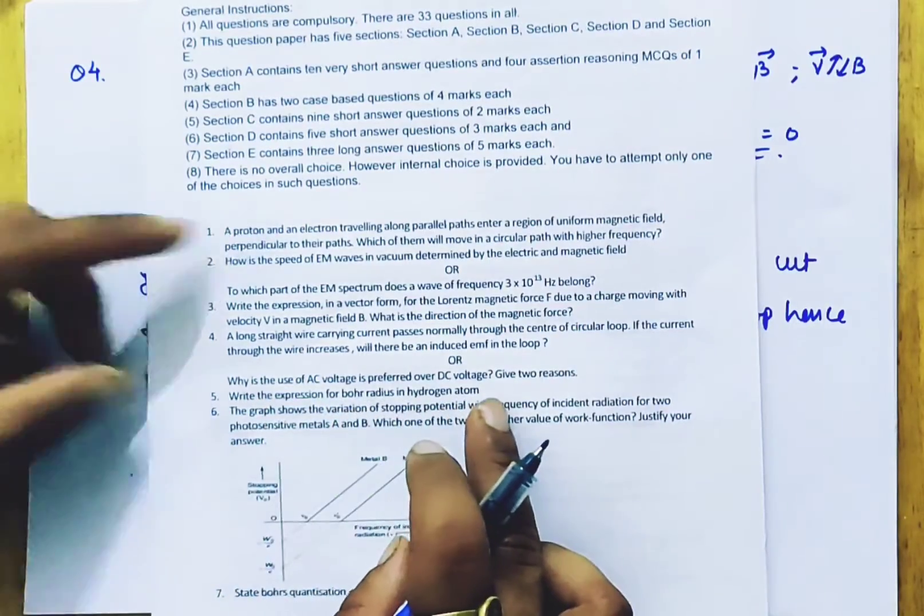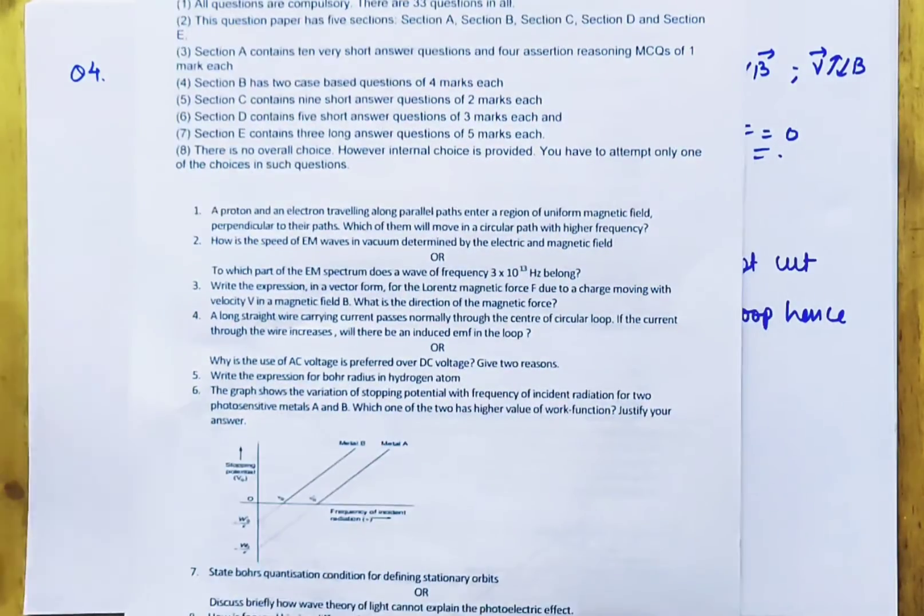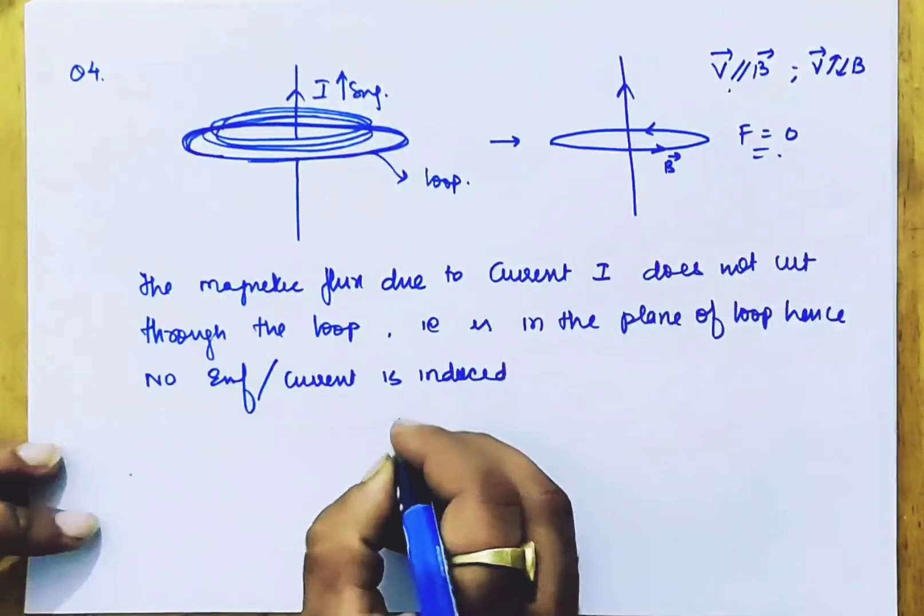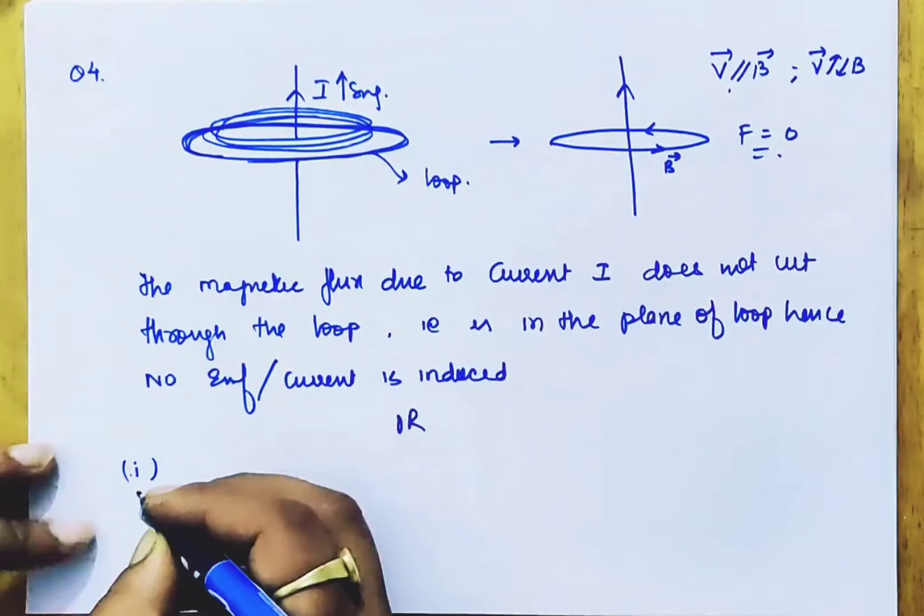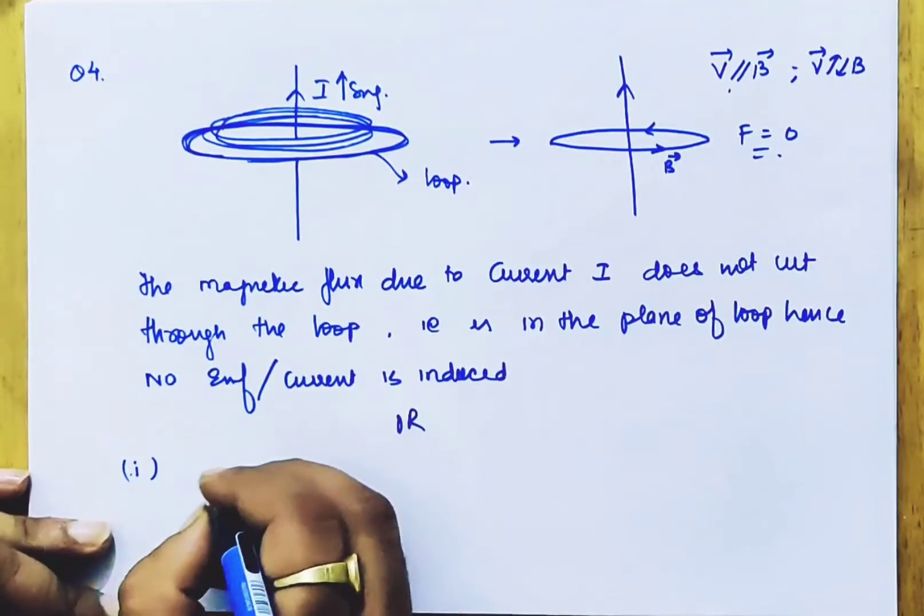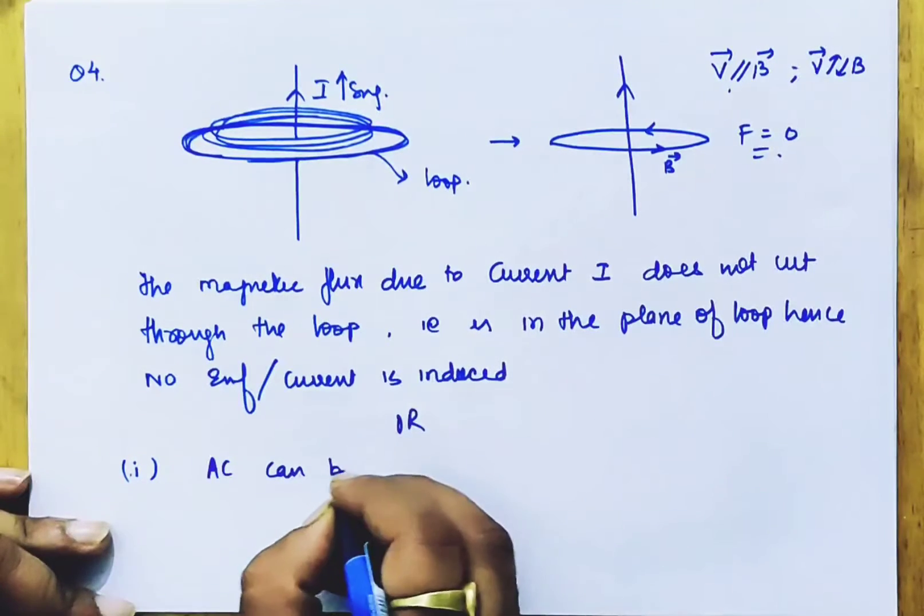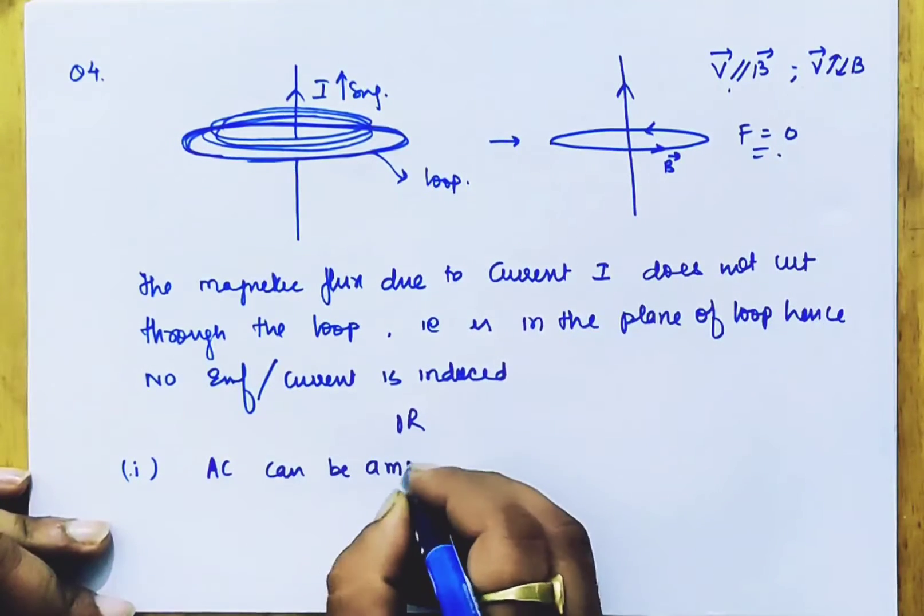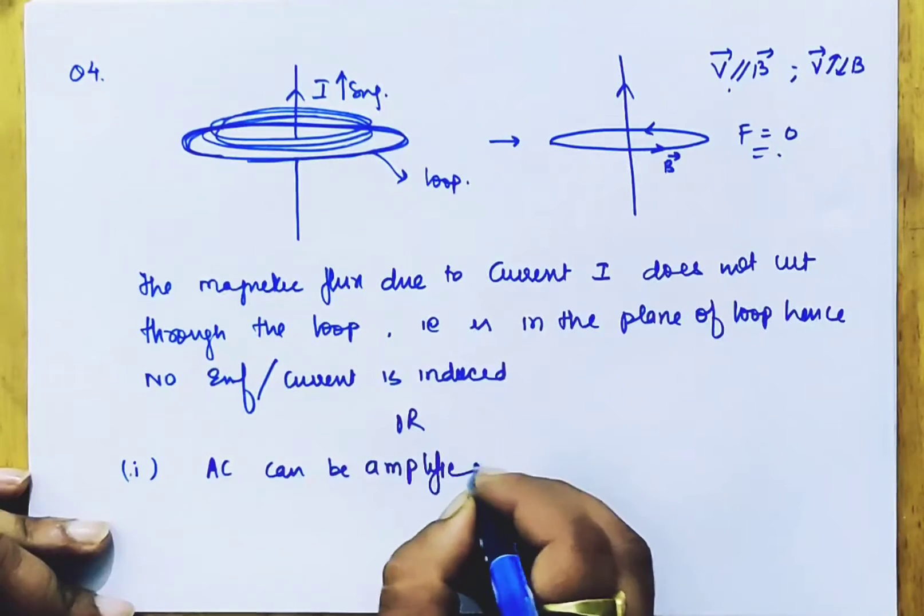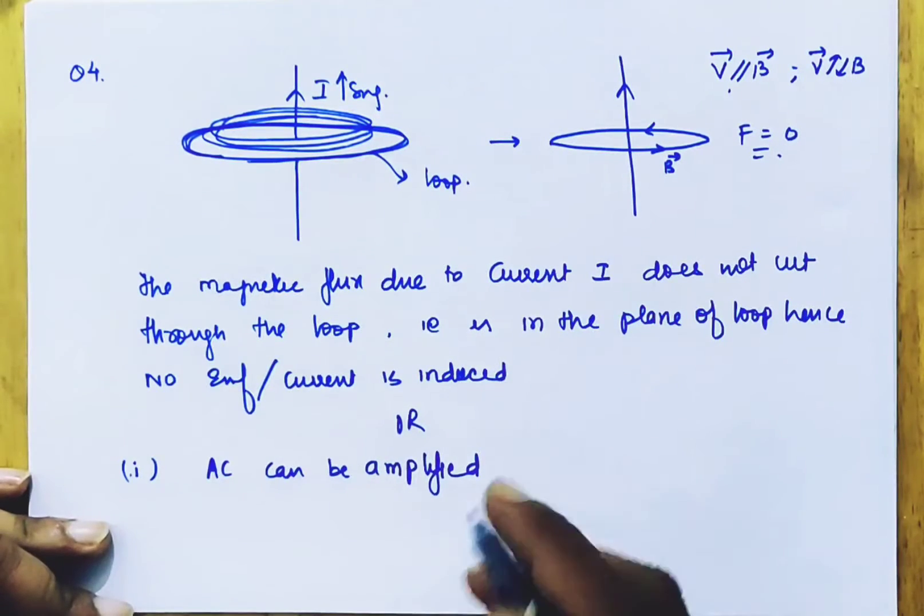Why is the use of AC voltage preferred over DC voltage? Give two reasons. What is the preference for AC to DC? First, AC can be amplified. Tesla has made AC. This is why AC can be amplified.